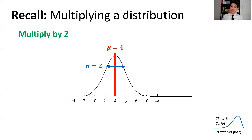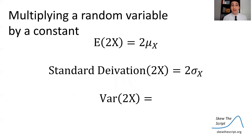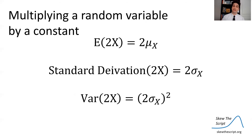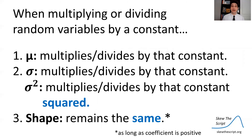When multiplying a random variable by a constant, both the mean and standard deviation multiply by that constant. Since variance is the standard deviation squared, the variance multiplies by the constant squared. For example, multiplying by 2 doubles the mean and standard deviation but quadruples the variance. Multiplying by 3 would increase the variance nine-fold. So: mean and SD multiply by the constant; variance multiplies by the constant squared; shape stays the same for positive constants.